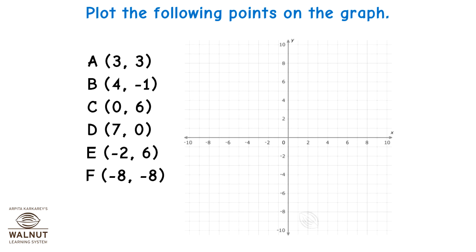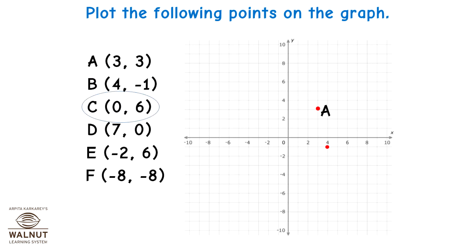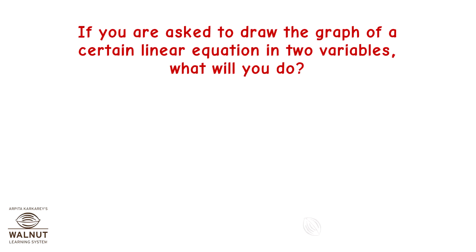Plot the following points on the graph. When the coordinates of a point are given, the first value is the distance from the x-axis and the second value is the distance from the y-axis. We mark the distance from the x-axis first, then mark the distance from the y-axis and see where the lines intersect. That gives us the point. We mark and label it, and repeat for all other points.